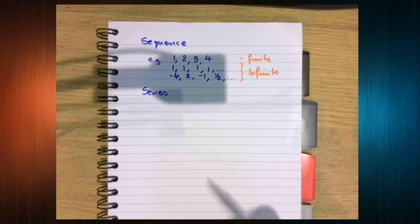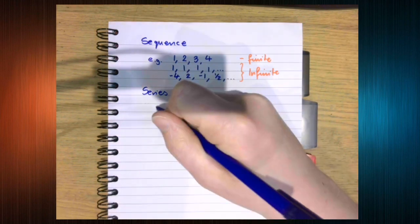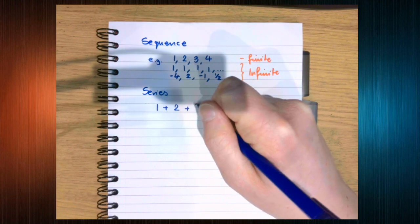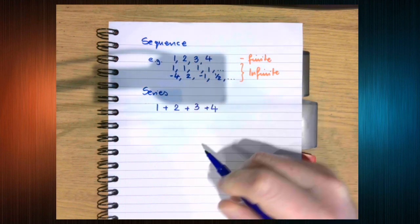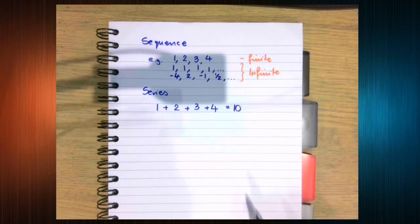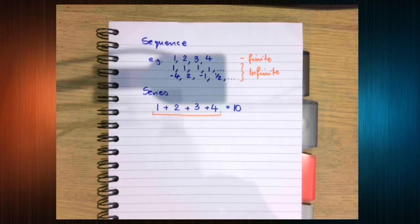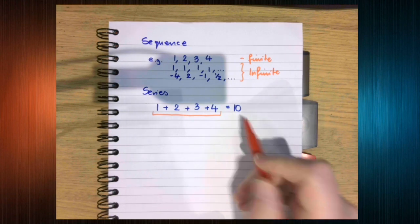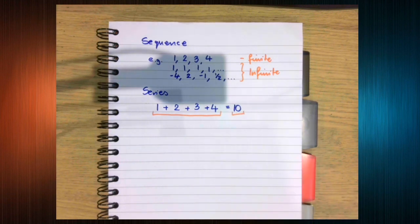We're going to look in more detail at those later on, but now we need to think about what a series is. So a series is what happens when you add the terms of a sequence together. You get a total. So in this case, 10. This here is the series. This is the value of the series or the total of the series.